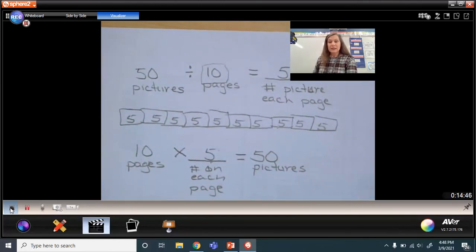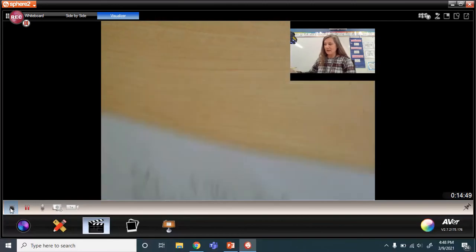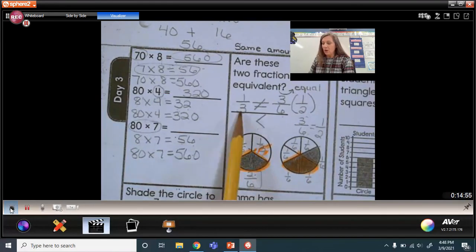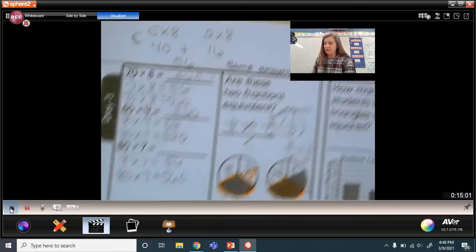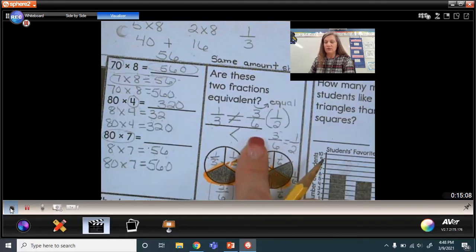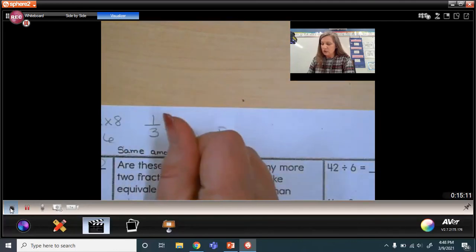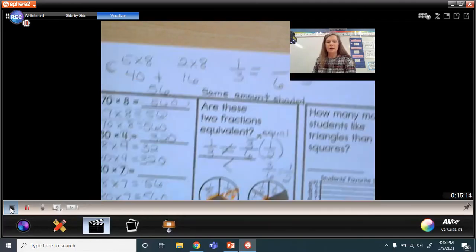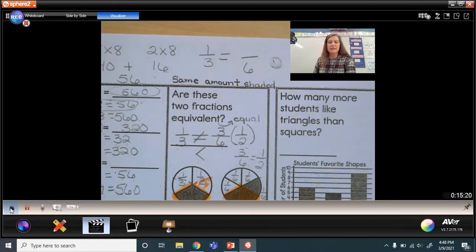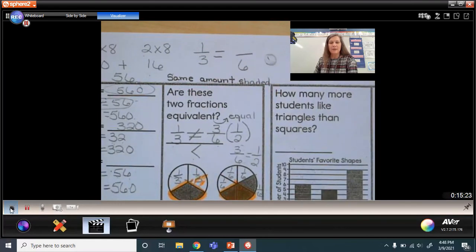So your discussion question for today, Wednesday, in your Wednesday folder, I want you to tell me how many sixths you need to be equivalent to one-third. So here's what your discussion question is. They asked us if this was equivalent. We said no, it's not equivalent. So how many sixths do you need to make one-third equivalent? That's your discussion today. Put that into your Wednesday discussion for our DMA. Have a great Wednesday, guys. Don't forget, happy numbers and fact fluency today. Have a great day. Bye.